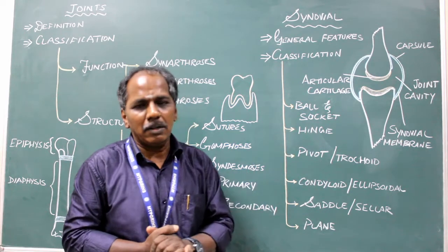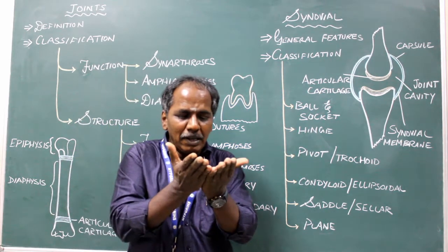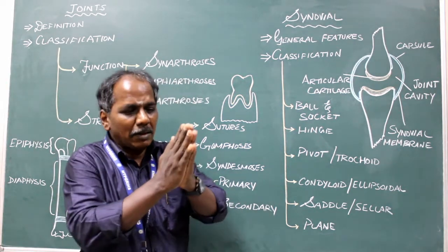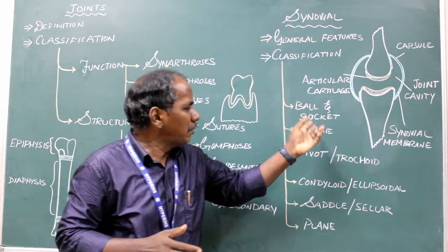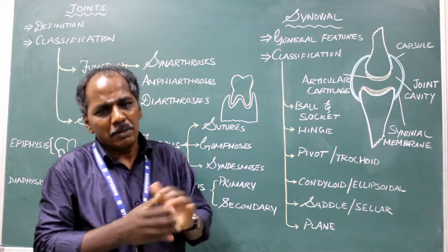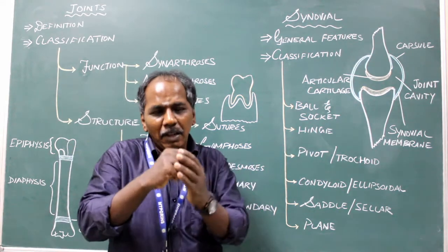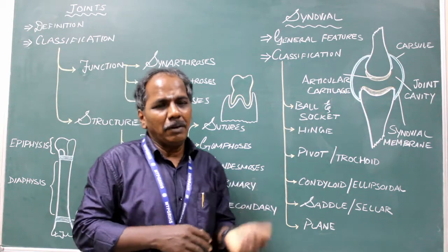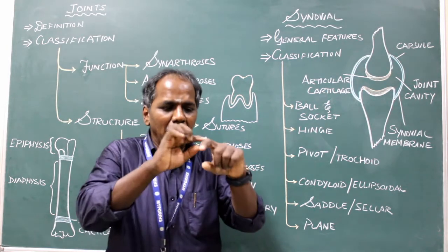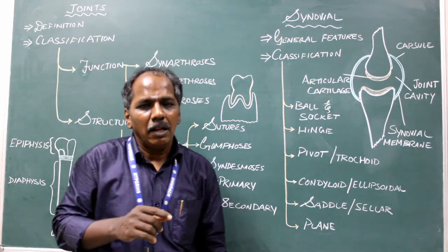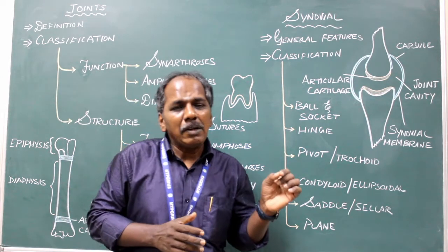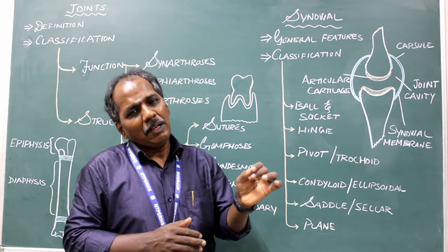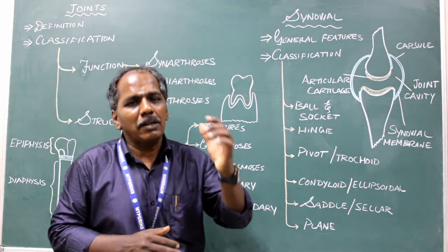Hinge variety, also called ginglymus. A hinge is a metal connector that allows a door to open or fold — only two movements are possible. In this type of joint, one articular surface is convex and fits into the concave surface of another bone. Examples: elbow joint, interphalangeal joint, and ankle joint. The knee joint is a modified hinge variety because, apart from flexion and extension, it also has slight medial and lateral rotation.